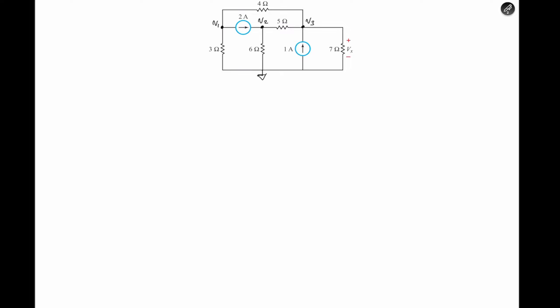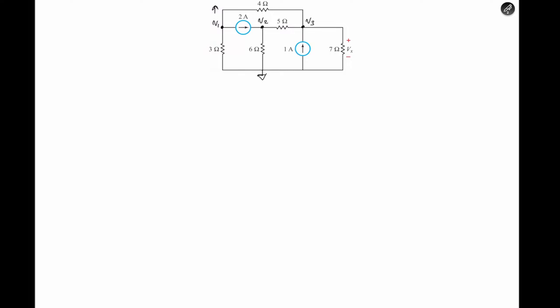If we want to know the current I1 — that current in this case — that current would be the difference between V1 and V3 divided by the 4-ohm resistor, and that would be I1. Then I2, as we said, would be the 2 amperes because current flowing from a terminal is positive.